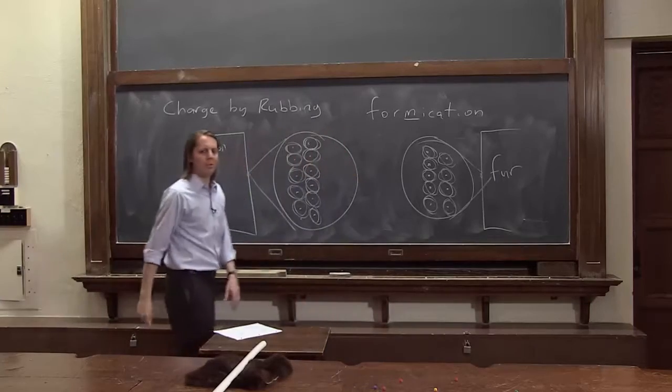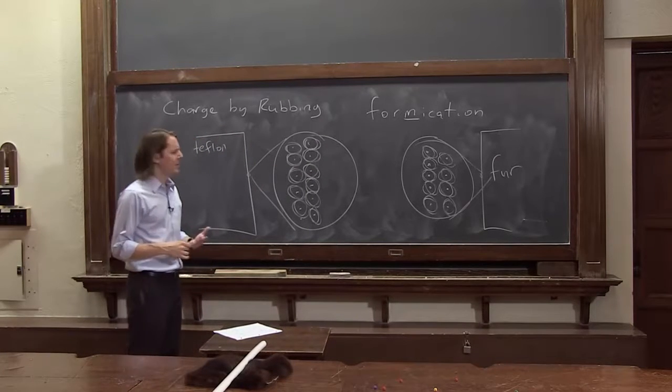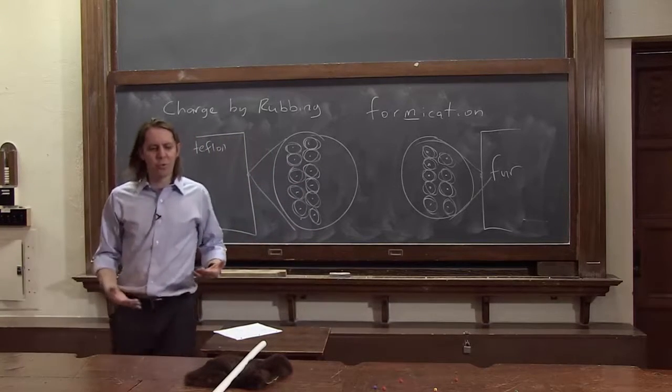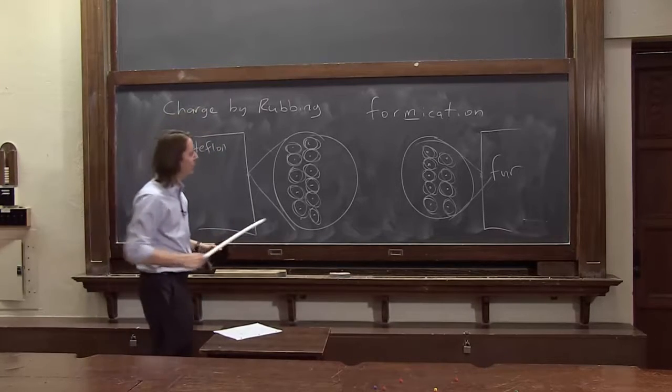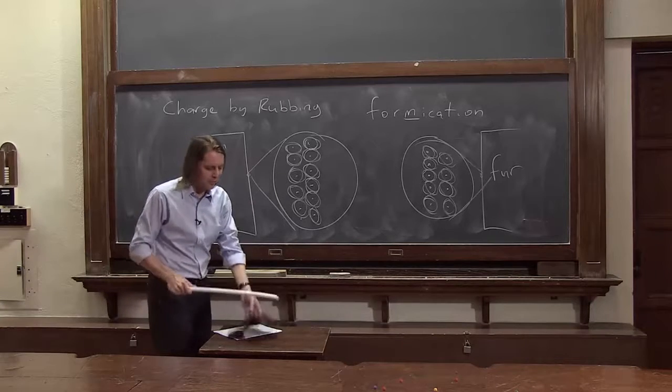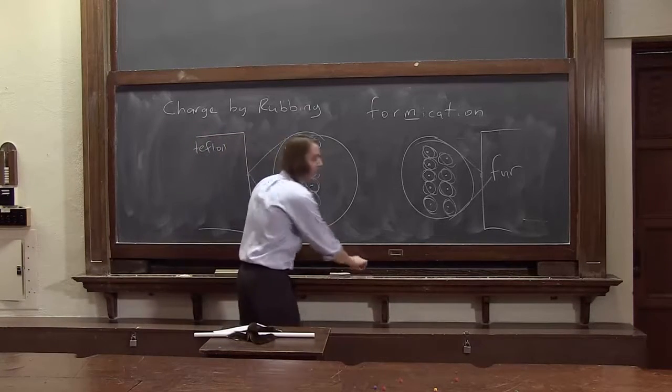But let's think, what happens when we rub something? You might think these are chemical bonds. Nothing's going to happen when you just rub. What you've got to remember is when you rub, you're taking the energy from your macroscopic muscles, and you're putting it only in these surface atoms. That's a lot of energy you're dumping into that surface. It's definitely enough to strip off electrons.